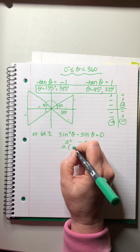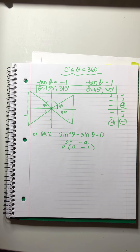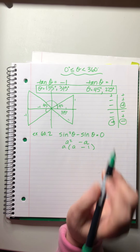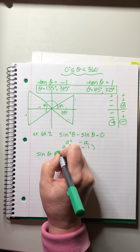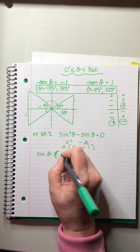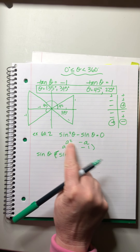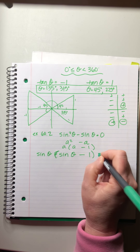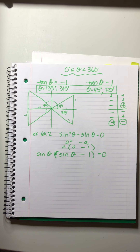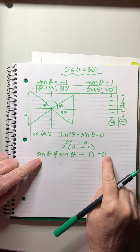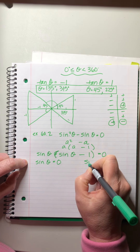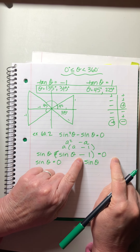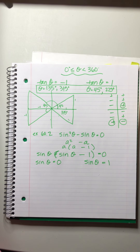This is a factoring where we have a² - a, so we factor out sin θ: sin θ (sin θ - 1) = 0. Using the zero factor theorem again, either sin θ = 0 or sin θ - 1 = 0, which means sin θ = 1.